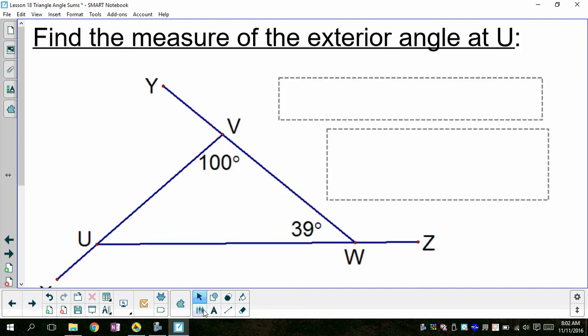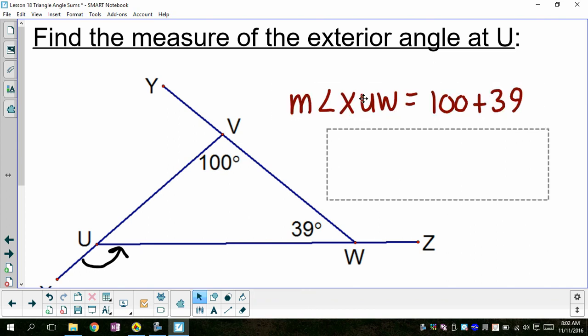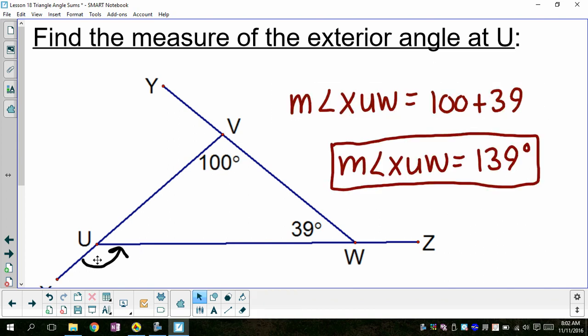In this one, I want to find the exterior angle at U. I want to know how big this angle is. So I can take these two remote interior angles, the two interior angles that are not next to the one I'm looking for. If I add them together, I will find this exterior angle is 139 degrees.